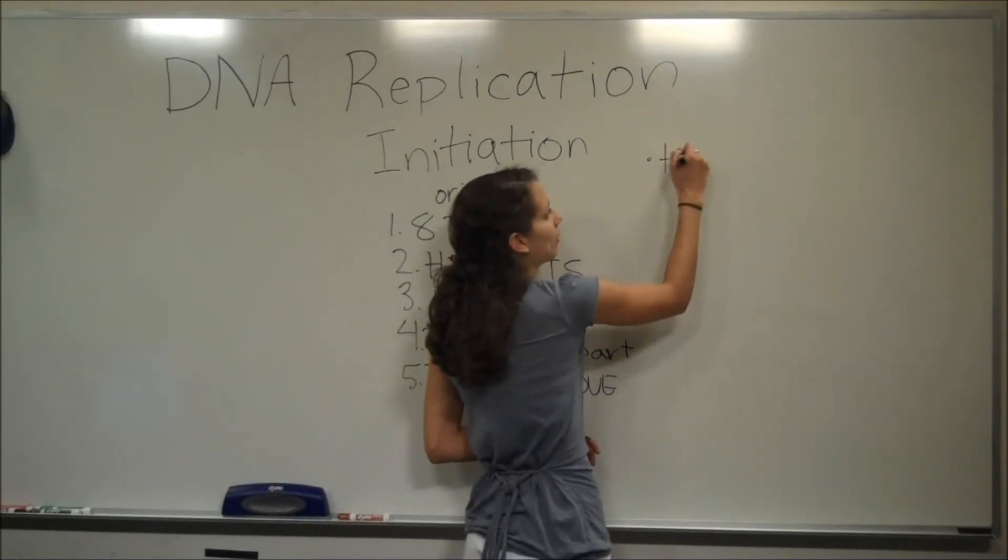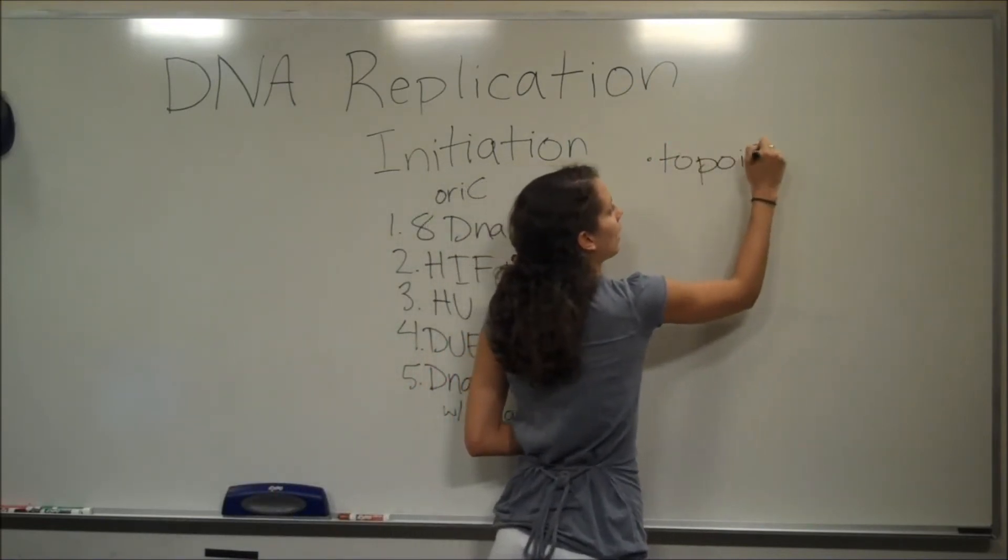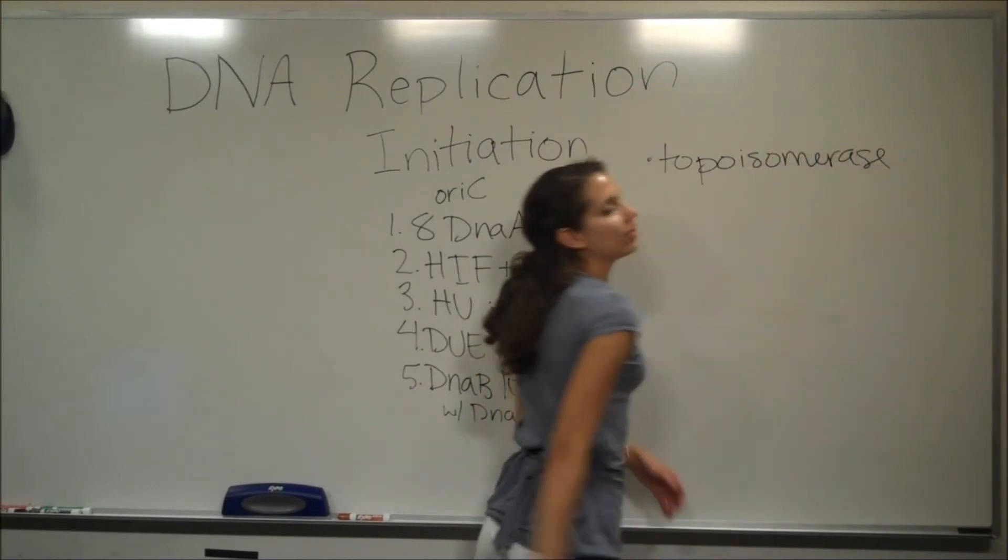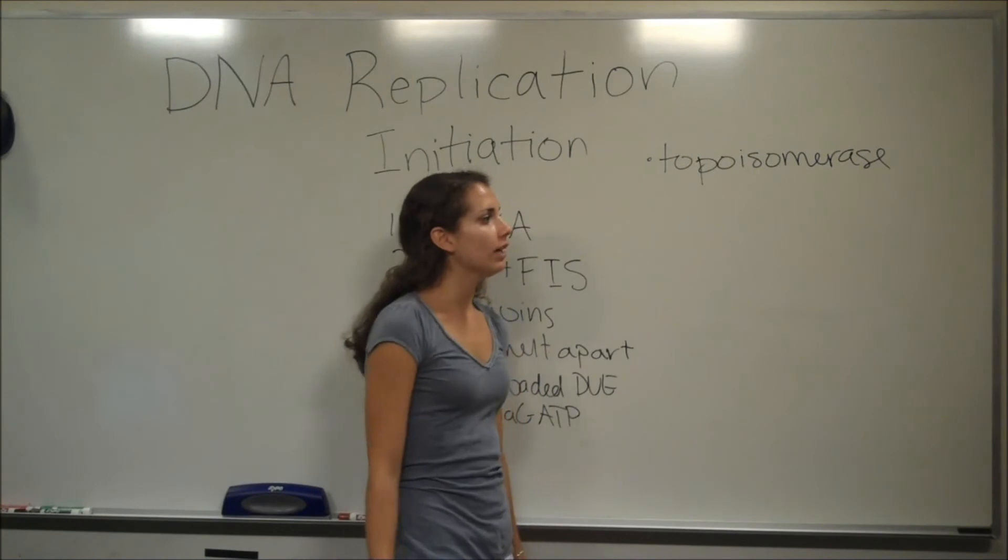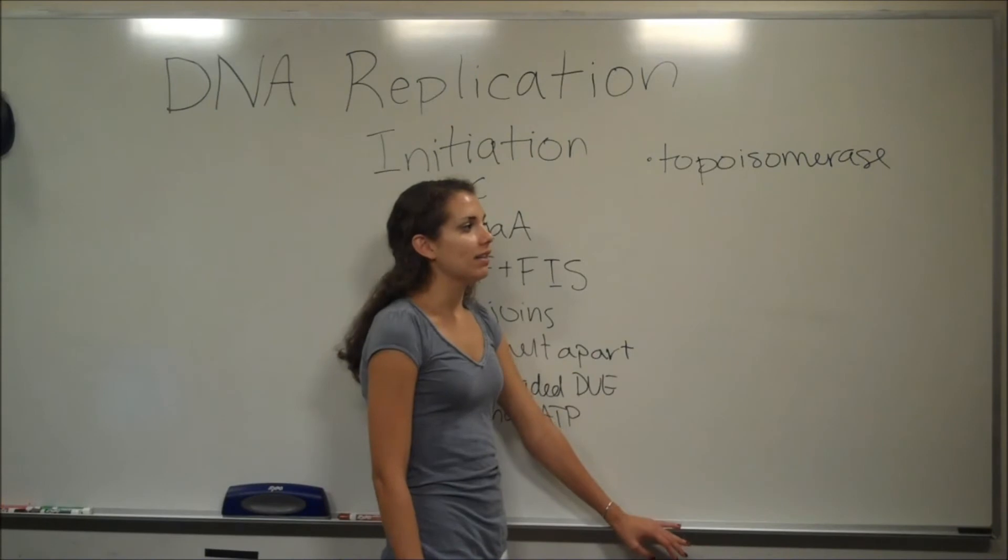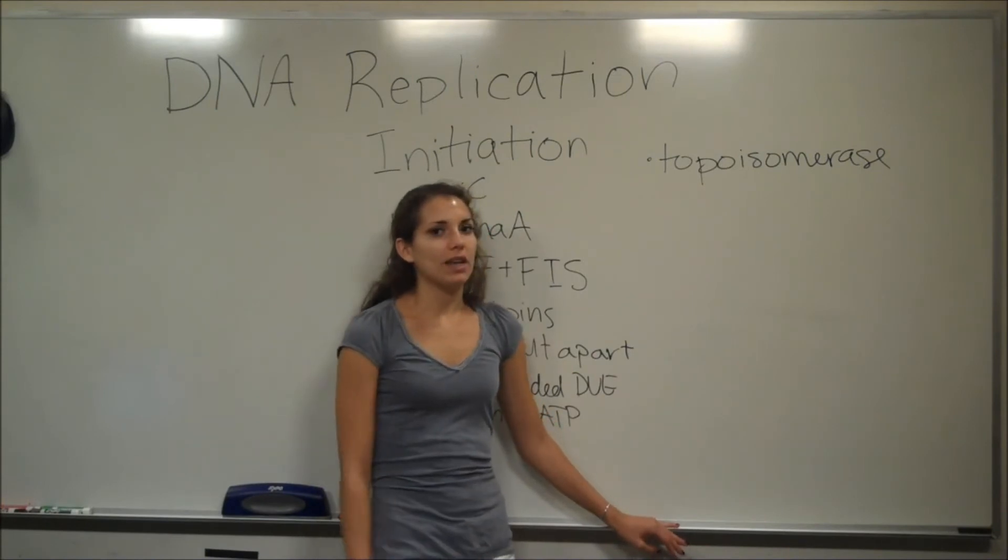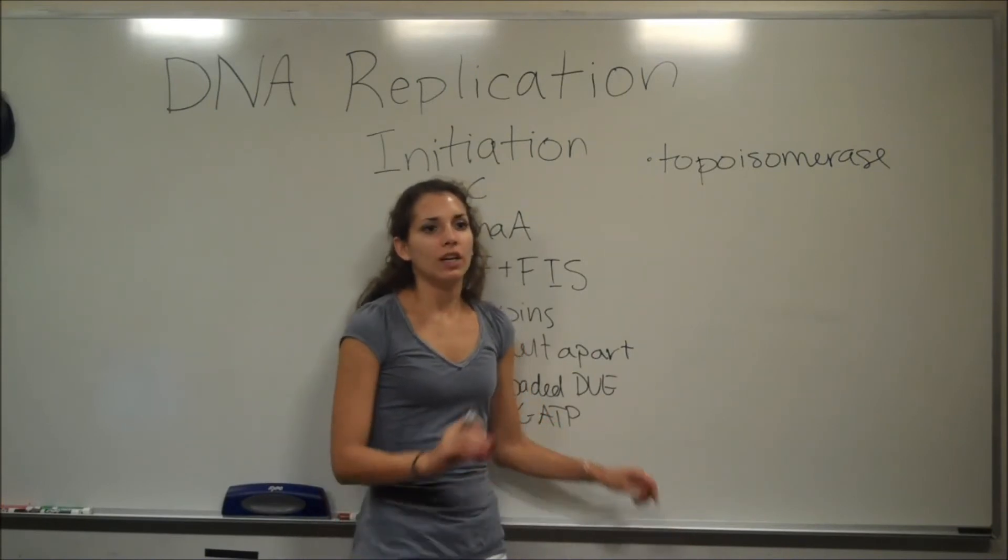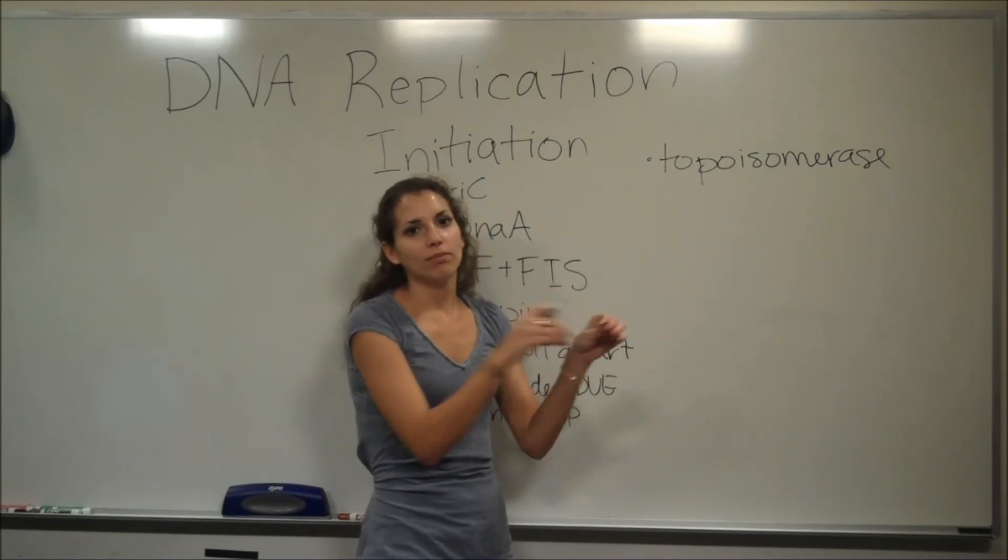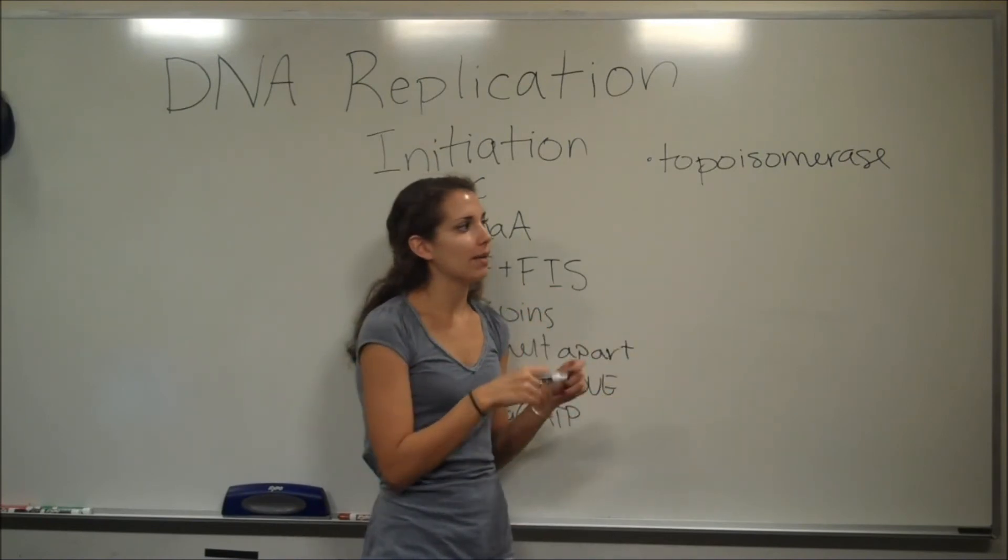So we have topoisomerases, and you might have heard these referred to as DNA gyrase in your classes before. Topoisomerases alleviate DNA supercoiling by nicking the DNA backbone and allowing them to unwind. So if you think of a rope getting twisted up really tight, this just cuts the rope so you can pull them apart and they're not as tightly twisted.